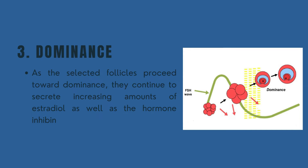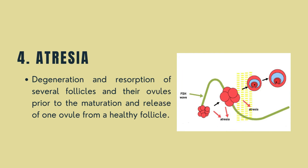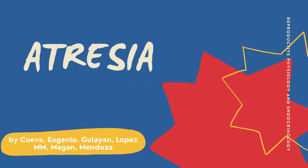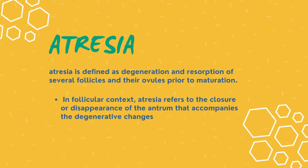As the selected follicles proceed toward dominance, they continue to secrete increasing amounts of estradiol as well as the hormone inhibin. Atresia is the degeneration and resorption of several follicles prior to the maturation and release of one ovule from a healthy follicle. Over 90% of ovarian follicles undergo this irreversible degenerative process. In follicular context, atresia refers to the closure or disappearance of the antrum that accompanies the degenerative changes.